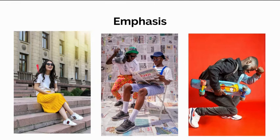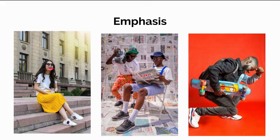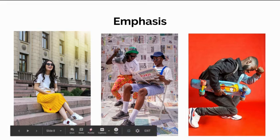In this first example, we use color as the emphasis. She has a white shirt and white shoes, a very simple hairstyle and simple sunglasses — but then boom, you see this bright color. That's how we use color for emphasis.